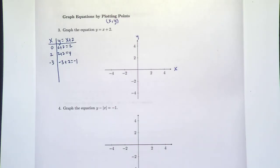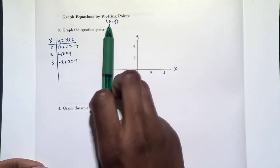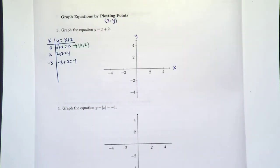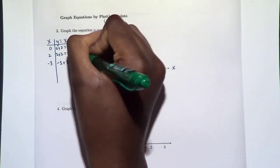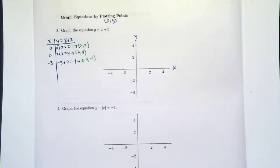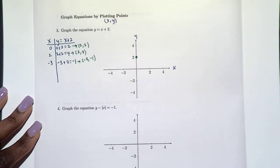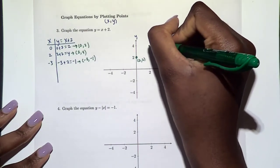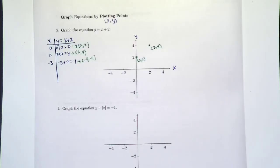All of these correspond to points, so let's rewrite them as x comma y. Our first point: x is 0, y is 2, so we have the point (0, 2). Next: x is 2, y is 4, giving us (2, 4). Then x is negative 3, y is negative 1, giving us (-3, -1). Now we can plot these on our graph. So x is 0, y is 2 goes right here — I'll label it. And we have (2, 4) — I'll label that as well. If I'm going too fast, make sure you pause or go back to review. And then we have (-3, -1).